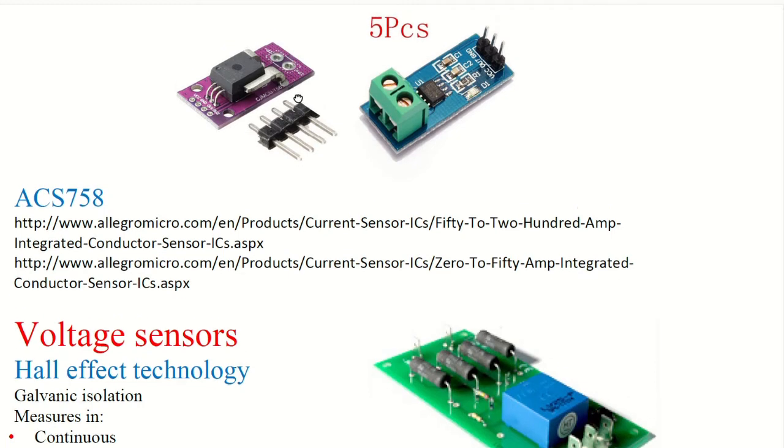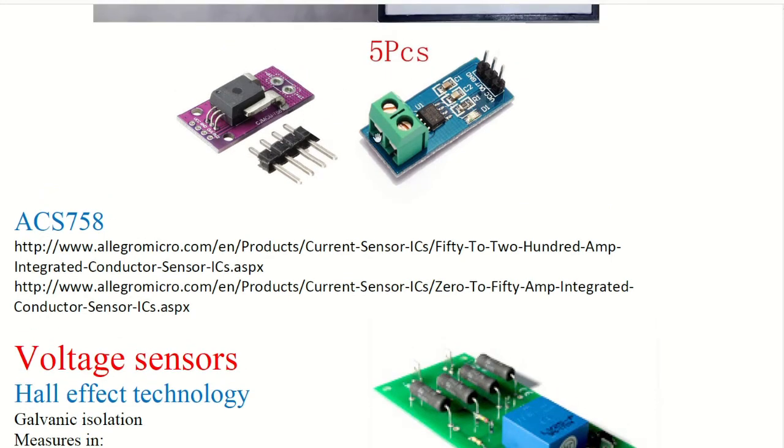Now you have very tiny pieces like this one, the AC 758. So this is one. The range is from 50 to 200 amps. So it's more common for high amps.